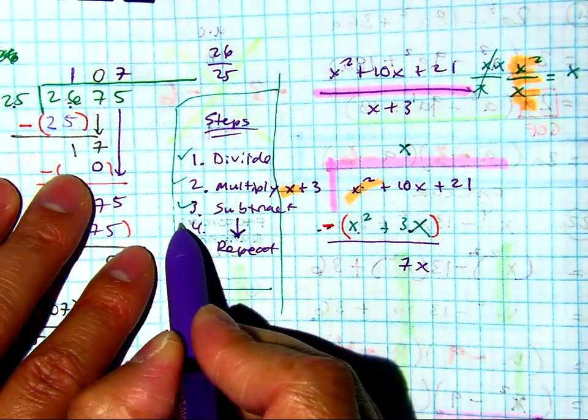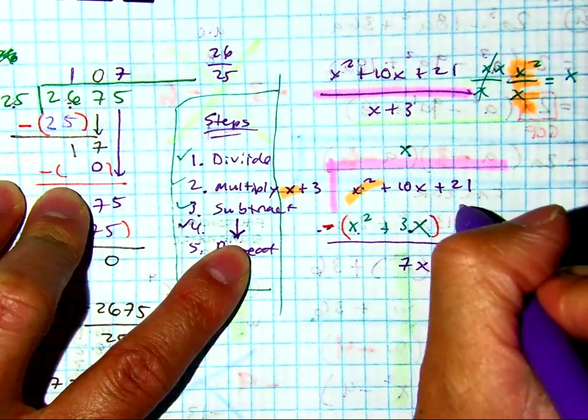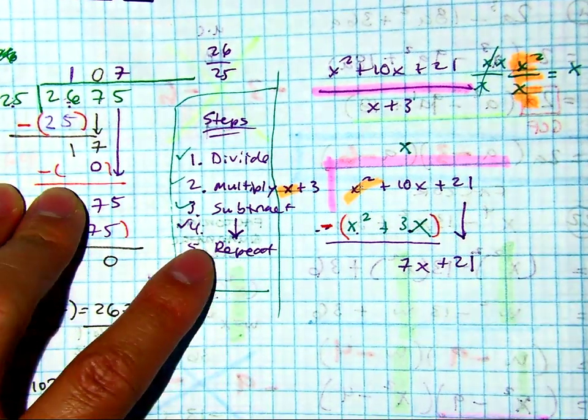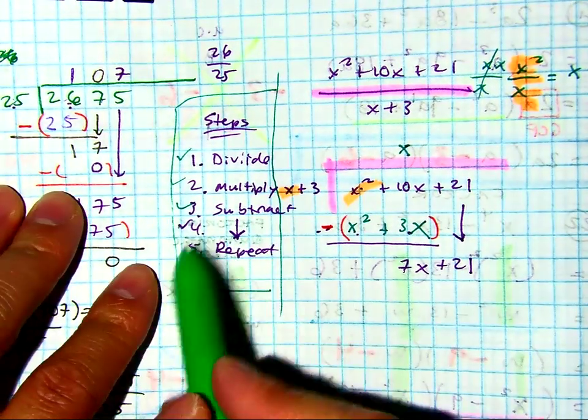Now we're going to bring down. Now I have plus 21. And then we're just going to repeat the cycle.